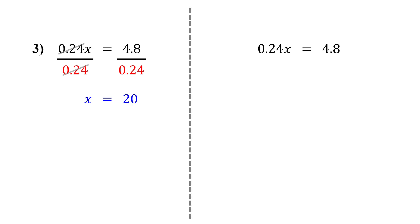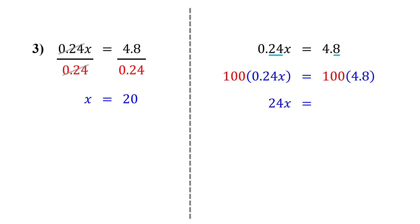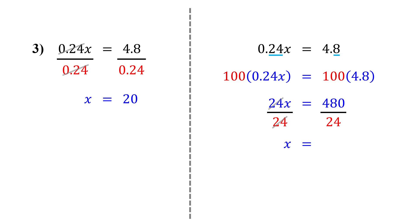Now let's solve it by clearing the decimals first to make things easier. In 0.24, there are two digits. In 4.8, there's one digit. So to clear both decimals, we multiply both terms by 100, because multiplying by 100 moves the decimal point two places to the right. 100 times 0.24x is 24x. 100 times 4.8 is 480. Now to isolate x, divide both sides by 24 — the 24s cancel out, leaving just x. What is 480 divided by 24? Much easier than dividing 4.8 by 0.24 in your head. You can think of it like this: 480 is 48 times 10, and 48 divided by 24 is 2. Times 10 gives us 20.